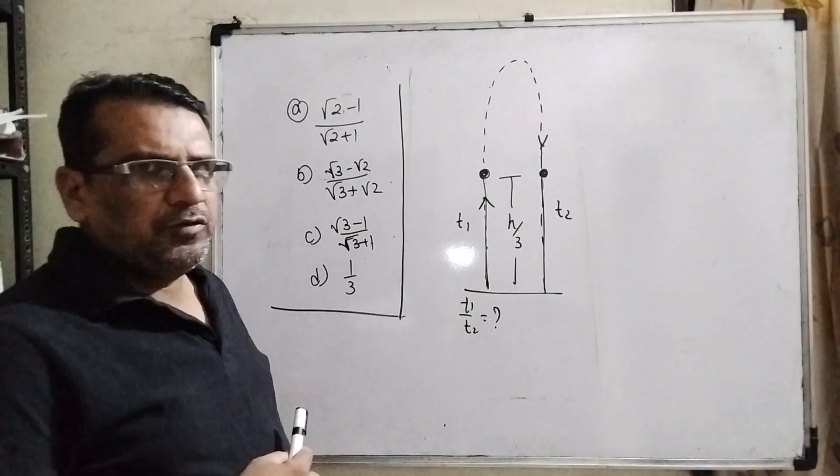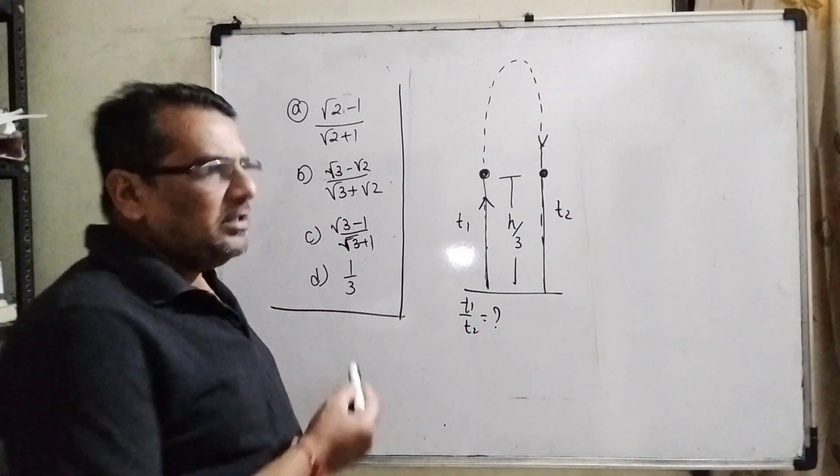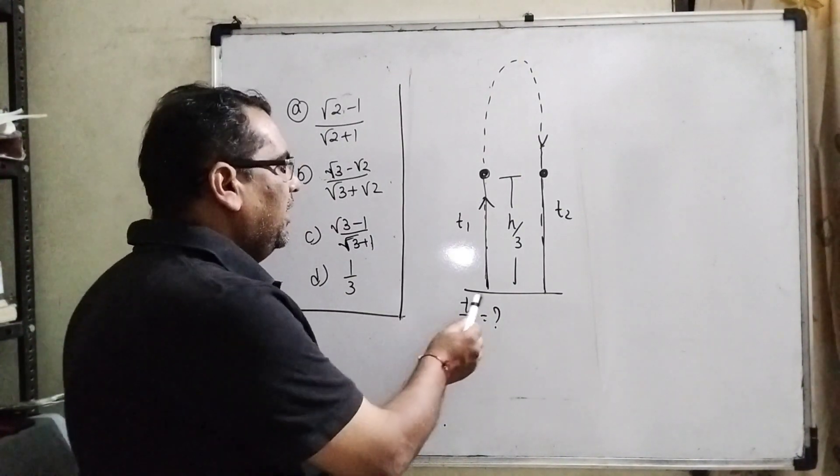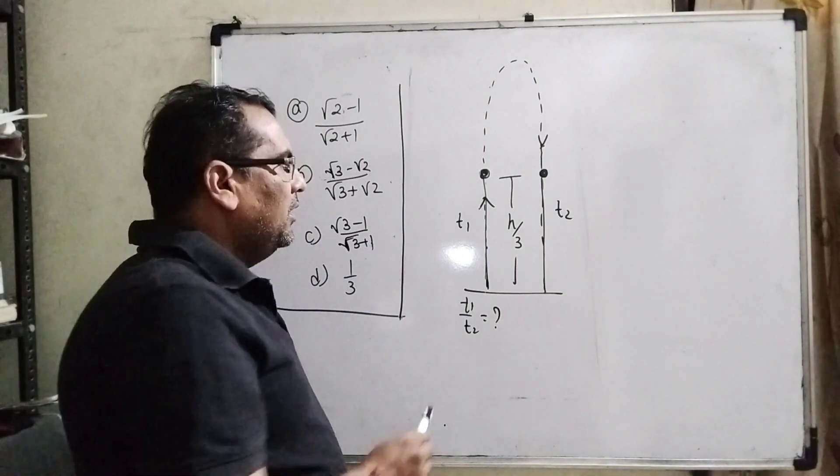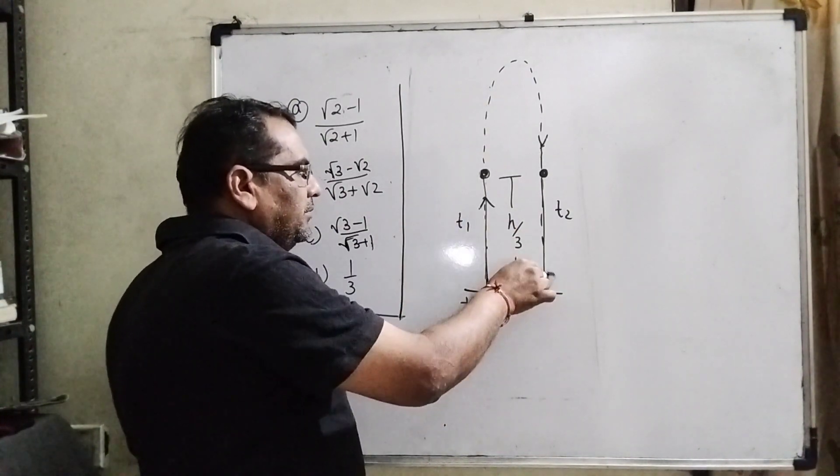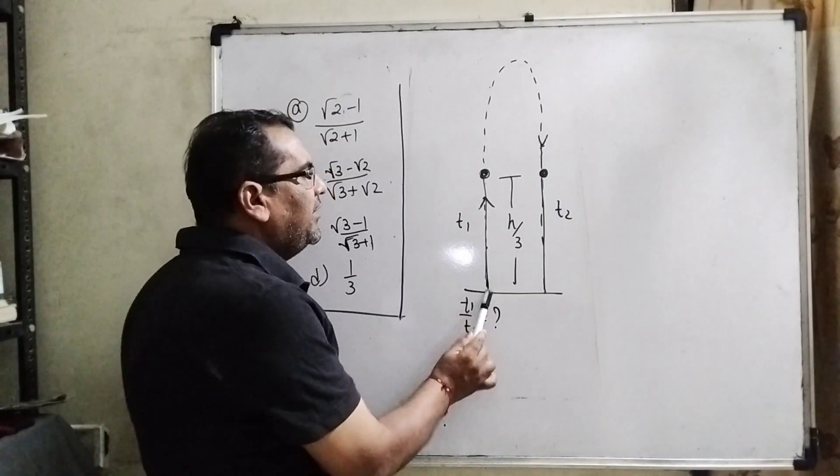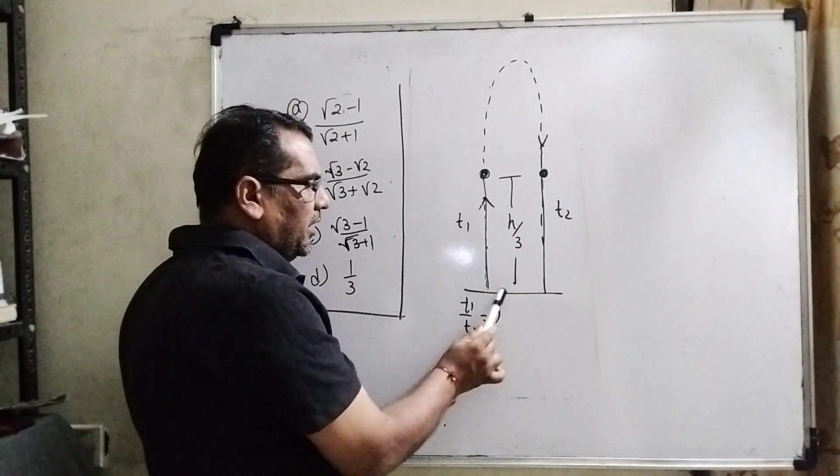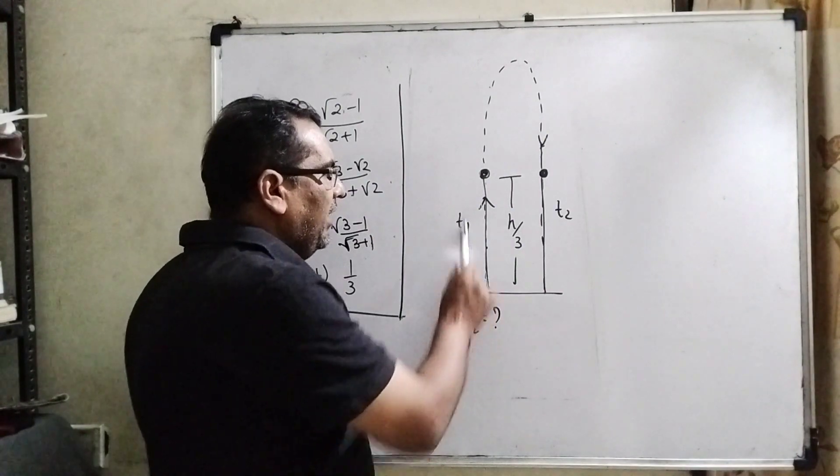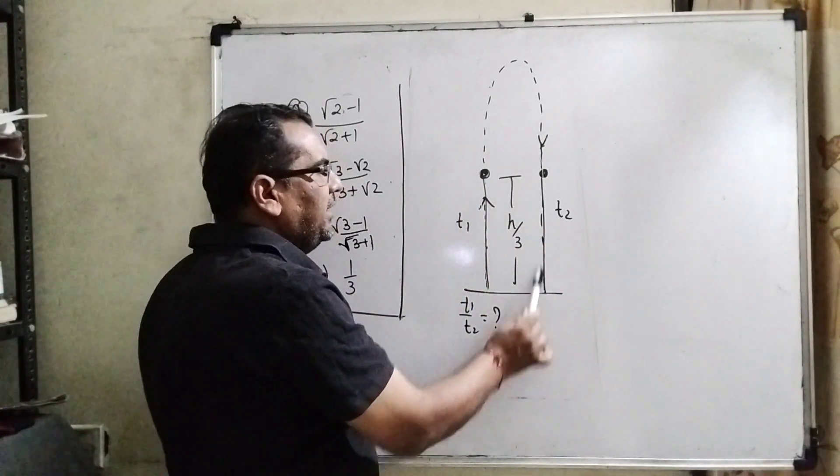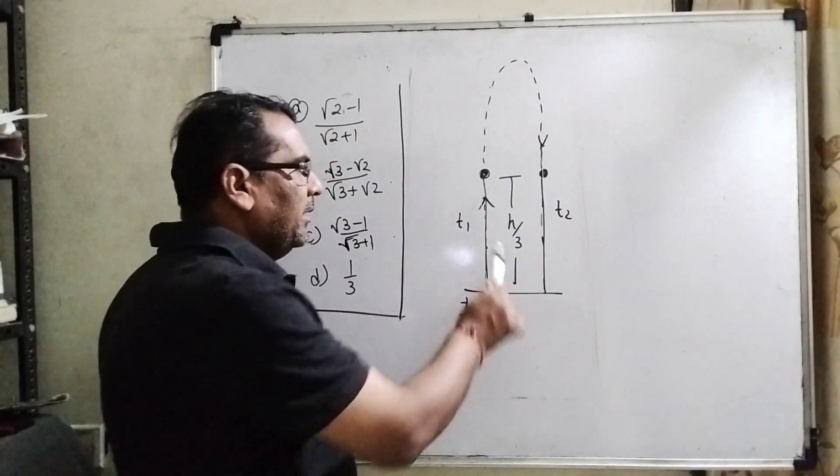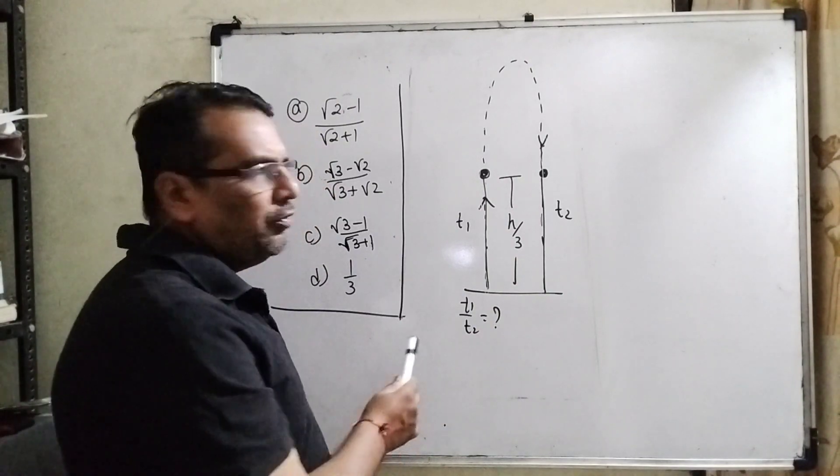Let us first understand what the question says. An object is thrown upward and comes back. We have to find the ratio of time t1 when it reaches height h/3 going up and t2 when it reaches h/3 coming down.